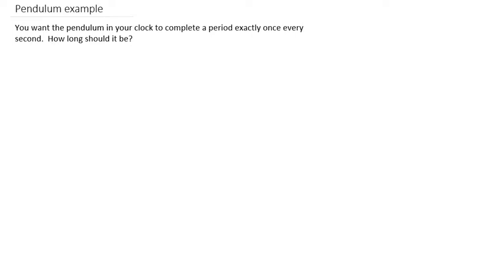Let's look at an example dealing with the simple harmonic motion of a pendulum. You want the pendulum in your clock that you're building to complete a period exactly once every second. How long should that pendulum be?